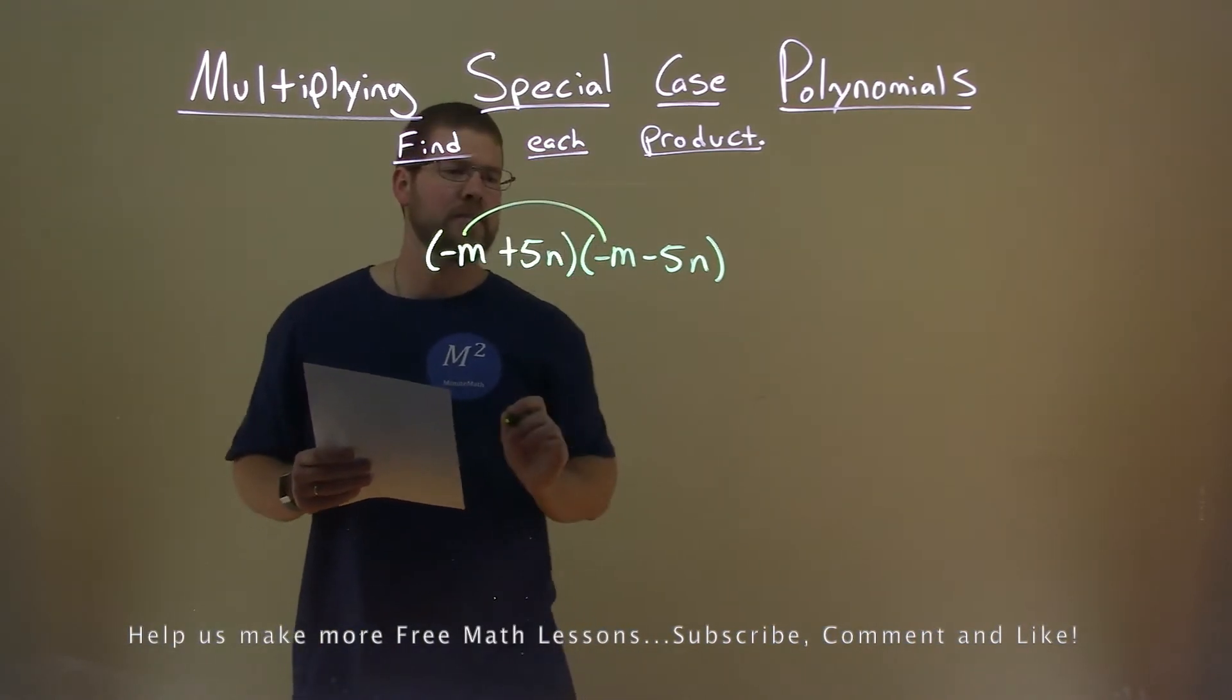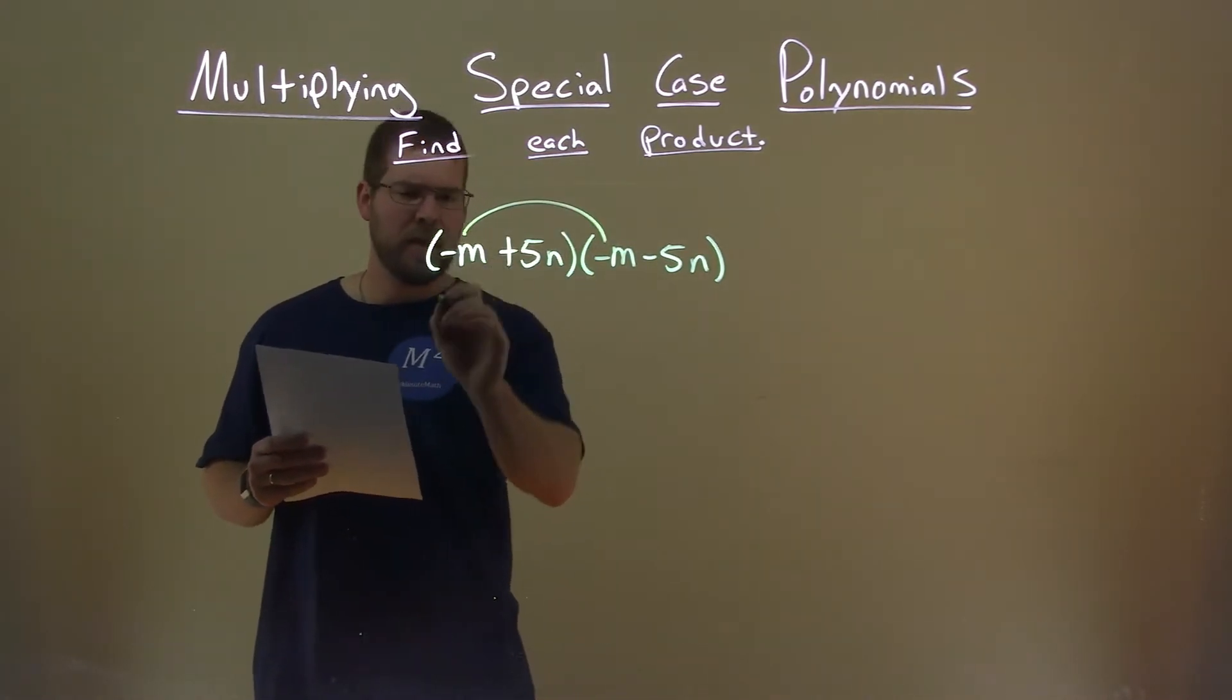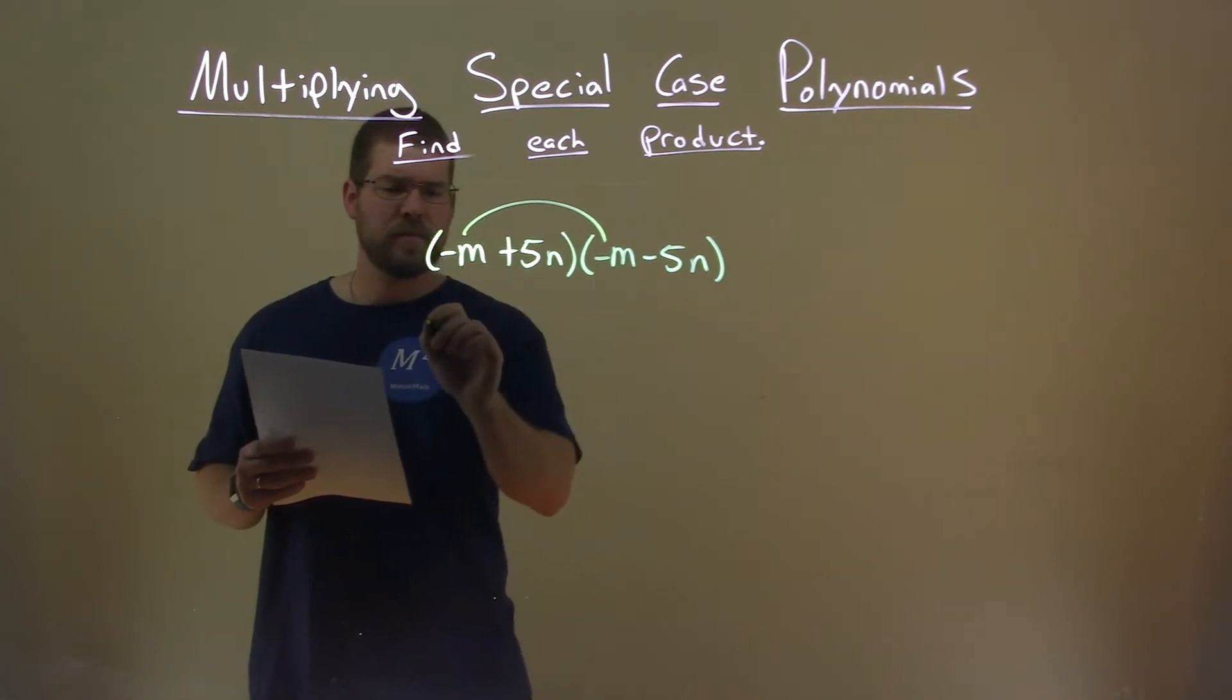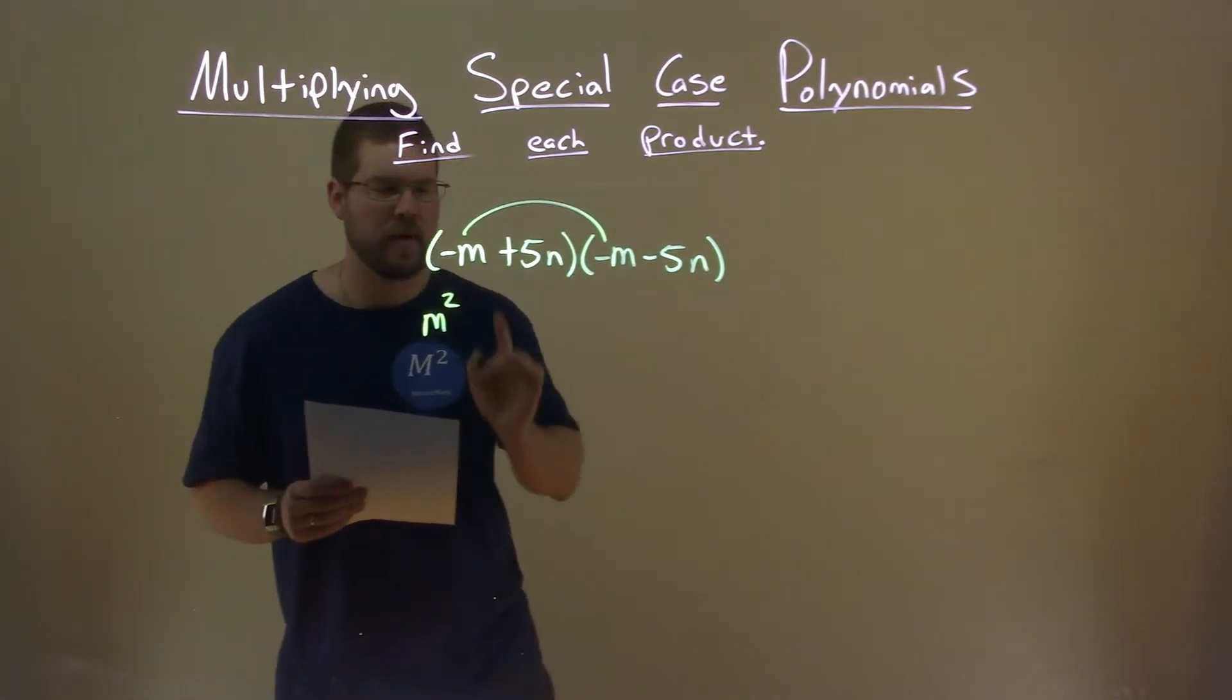First thing, negative m times negative m: two negatives make a positive, so positive m squared. Be careful with your negatives.